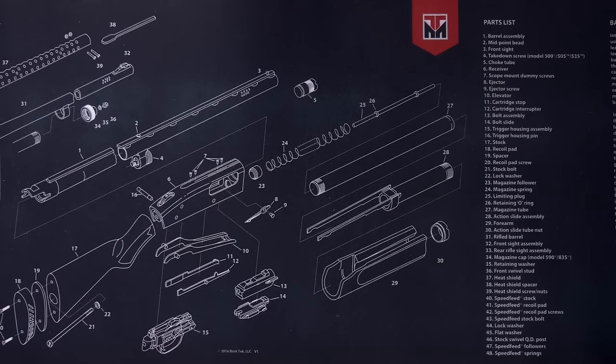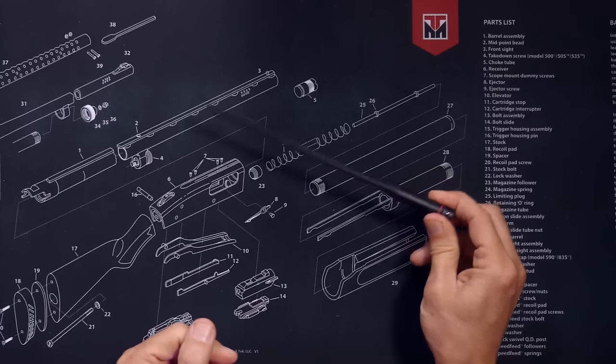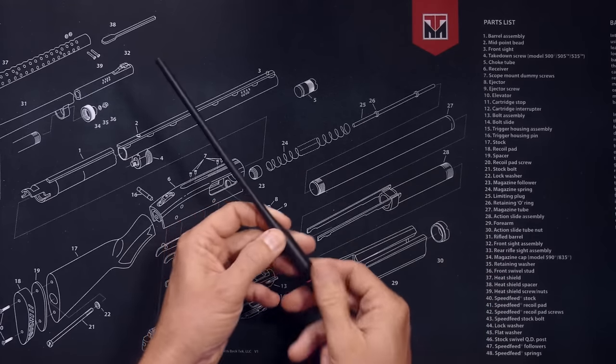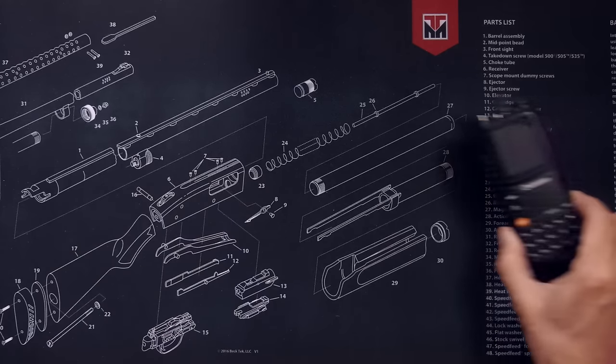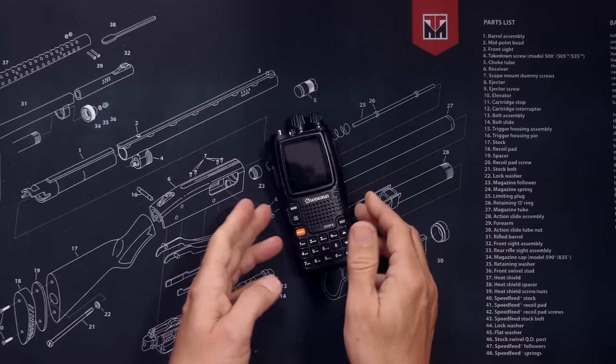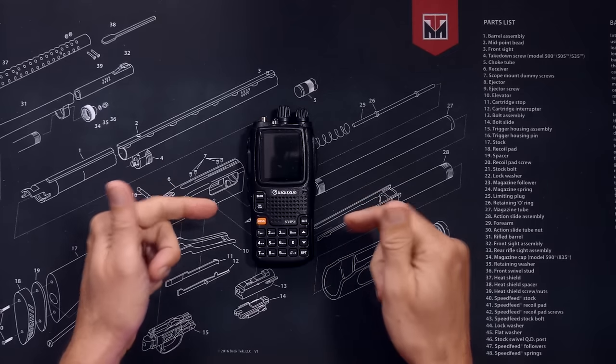You will receive an antenna. I will speak more of this antenna momentarily. And you will receive the Wuxin Ocean KG-UV9PX ham radio.